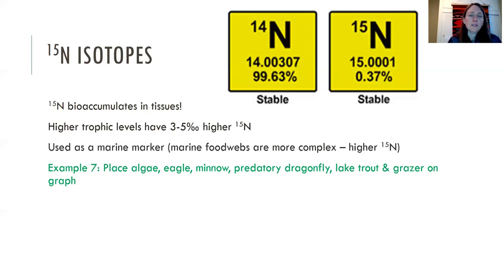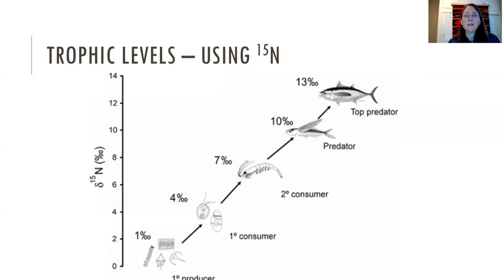And they come from only possibly salmon-derived nitrogen. So for example, build a new food web where you have algae, an eagle, a minnow, a predatory dragonfly, a lake trout, and a grazer on your graph, and try to put them in order based on their nitrogen-15 signature.